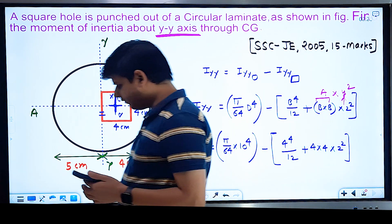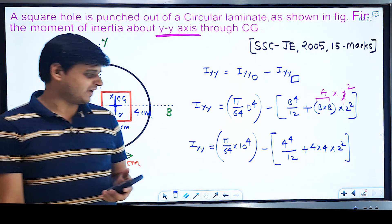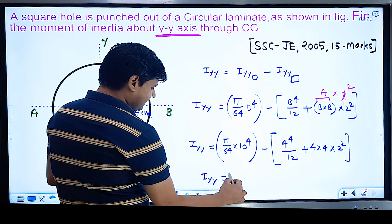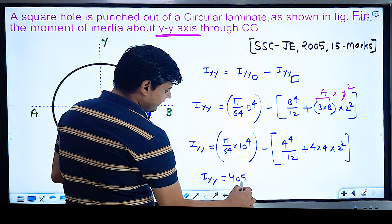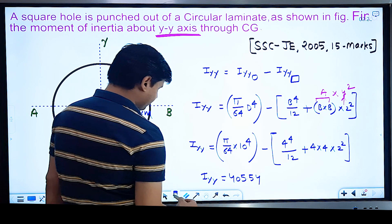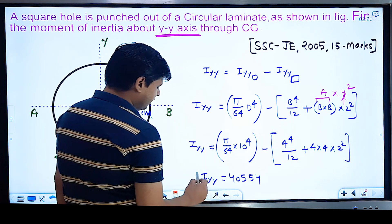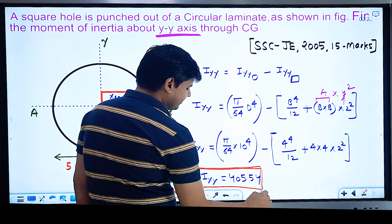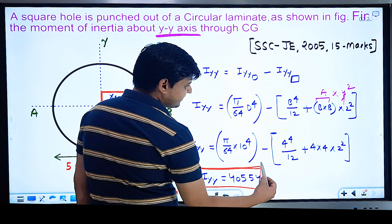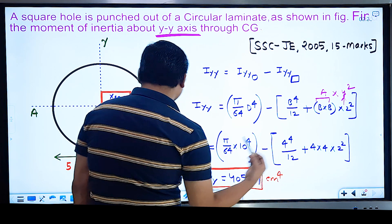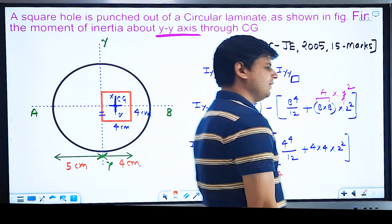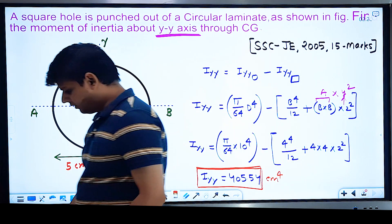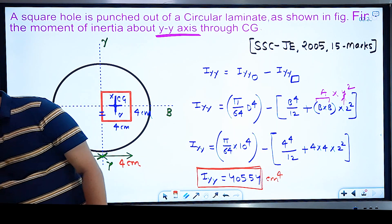Putting in values: π/64 × 10⁴ − (4⁴/12 + 4 × 4 × 2²). All dimensions are in centimeters. Calculating this gives the final value of 405.54 cm⁴. This is the moment of inertia about the Y-axis.